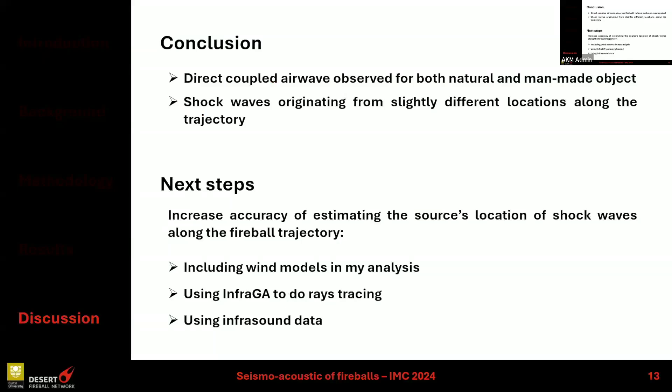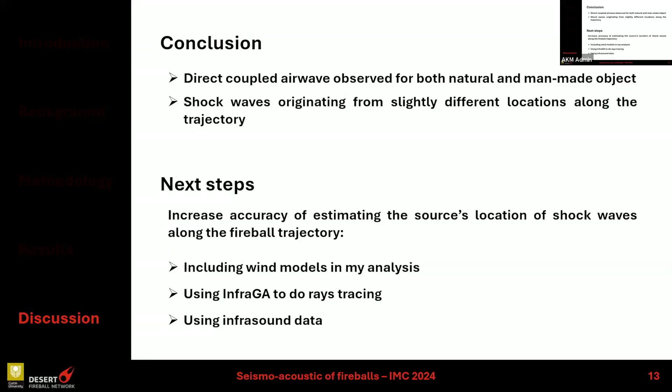To conclude, I detected direct coupled airwaves for both the natural events and the sample return capsule re-entry. They originated from slightly different parts of the trajectory, but most of the time they came from the end of the trajectory. The next step will be to increase the accuracy of my estimation of the shock wave source location along the trajectory, mainly by including wind models in the analysis.